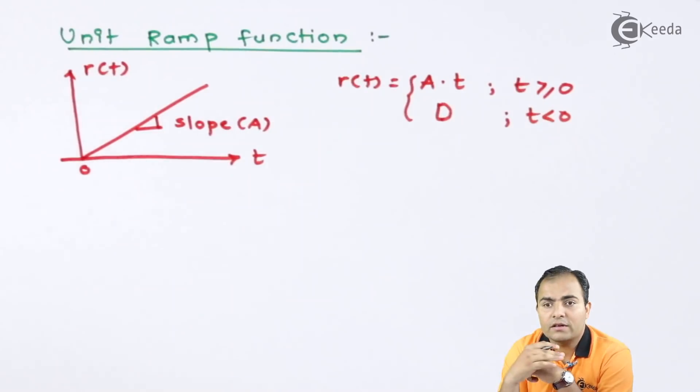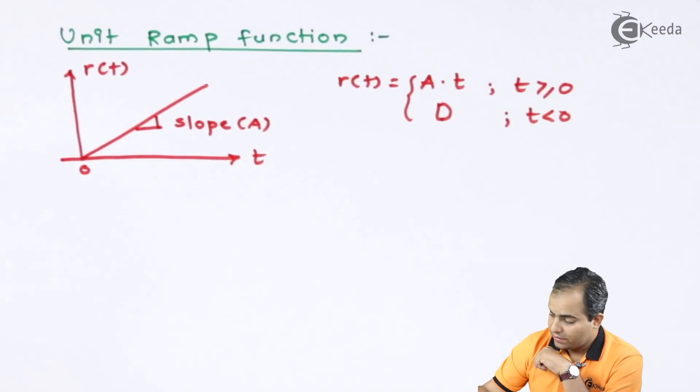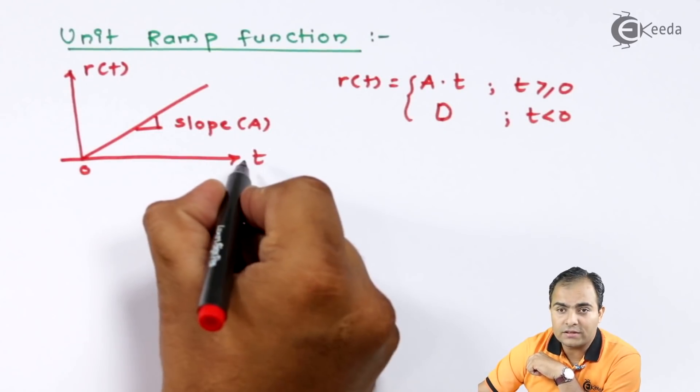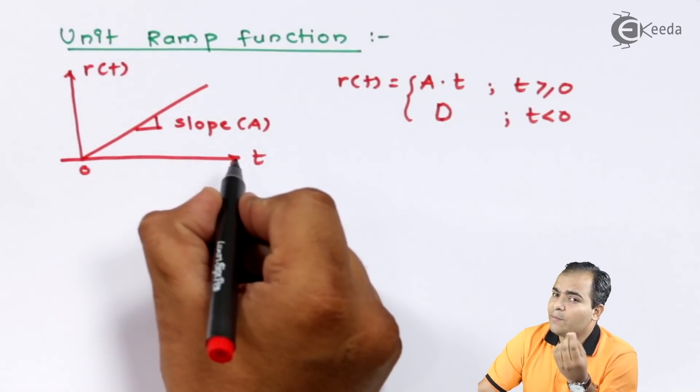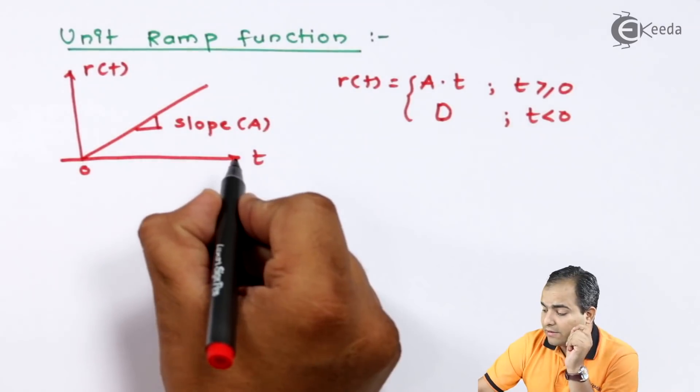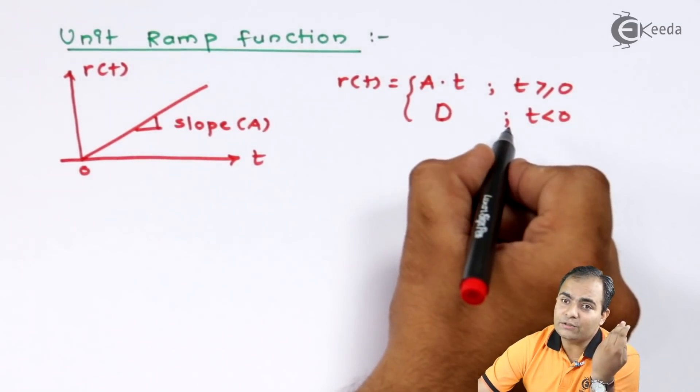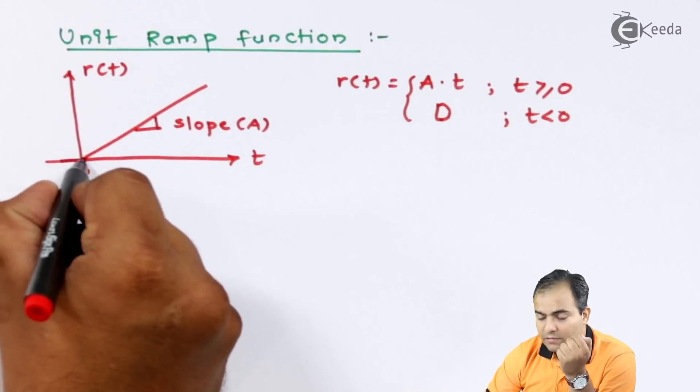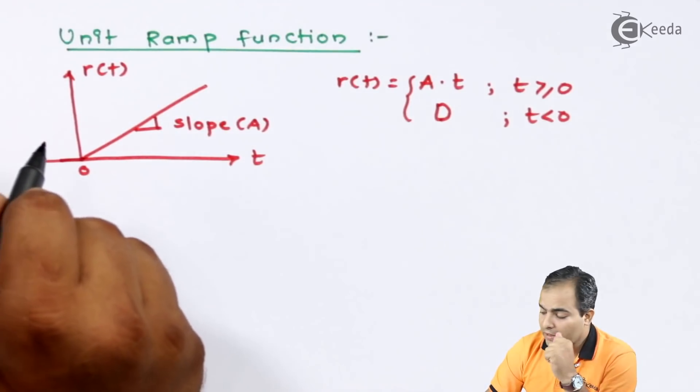Now, this graph is only available for t is greater than or equal to 0, and for t less than 0, amplitude is 0. If your t value is greater than or equal to 0, from 0 onwards, your graph is having some amplitude. But for t less than 0, in the negative part, your amplitude is having 0 value.